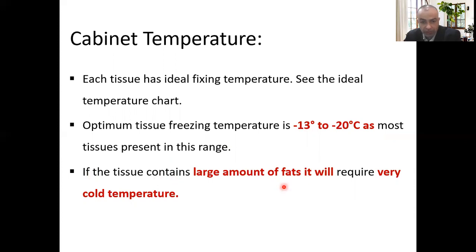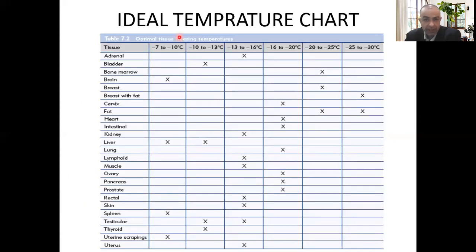If the tissue contains a large amount of fat, it will require a very cold temperature. The ideal temperature chart falls between minus 13 to minus 20 for most tissues. For fatty tissue, the temperature should be minus 20 to minus 25. For example, breast tissue with fat requires minus 20 to minus 25. For pressed tissue with fat it will be minus 13, and for fat alone it will be minus 13, and so on.